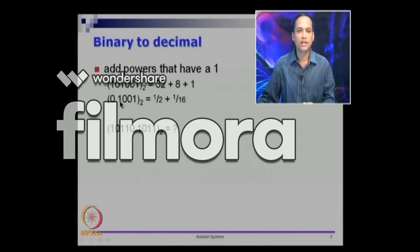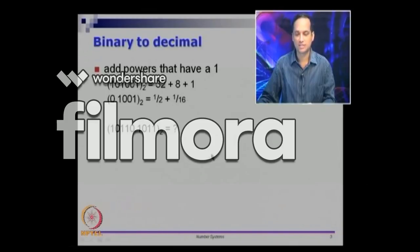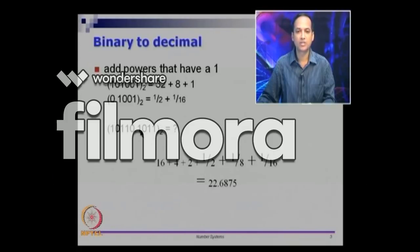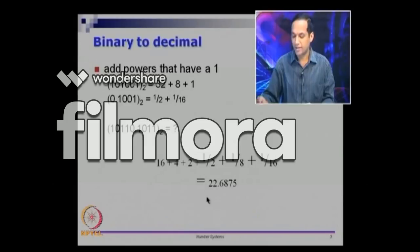For the fractional example, this is 1 into 2 power minus 1 plus 1 into 2 power minus 4, that is 1 half plus 1 16th. Let us look at what the equivalent for 1 0 1 1 0 dot 1 0 1 1 is. Starting from the dot going left: this is 2 power 0, this is 2 power 1 so we have the 2 term, then 2 squared gives 4, 2 power 3 is missing, then 2 power 4 gives 16. So the integer part is 16 plus 4 plus 2, which is 22. For the right side: 2 power minus 1 appears here, 2 power minus 2 is not there, then we have 2 power minus 3 and 2 power minus 4. So that is 1 half plus 1 8th plus 1 16th, which is 0.6875. The left side gives us the integer 22, the right side gives us 0.6875, so overall we have 22.6875.